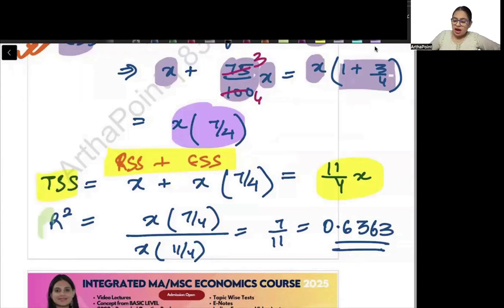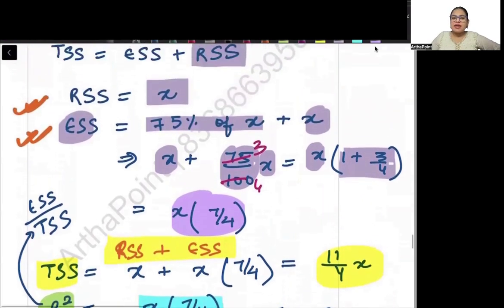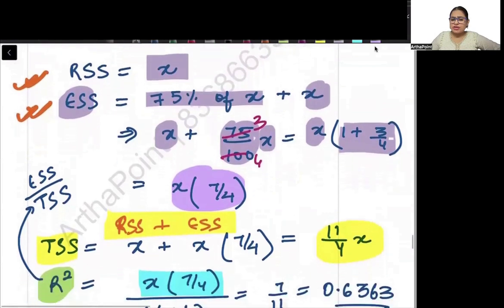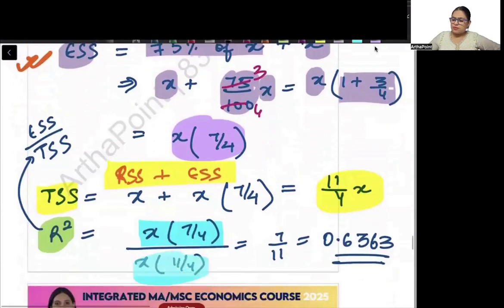Now my R square is what? R square can be written as ESS by TSS. So ESS will get this value which is equal to X into 7 by 4 and my TSS will be 11 by 4X.